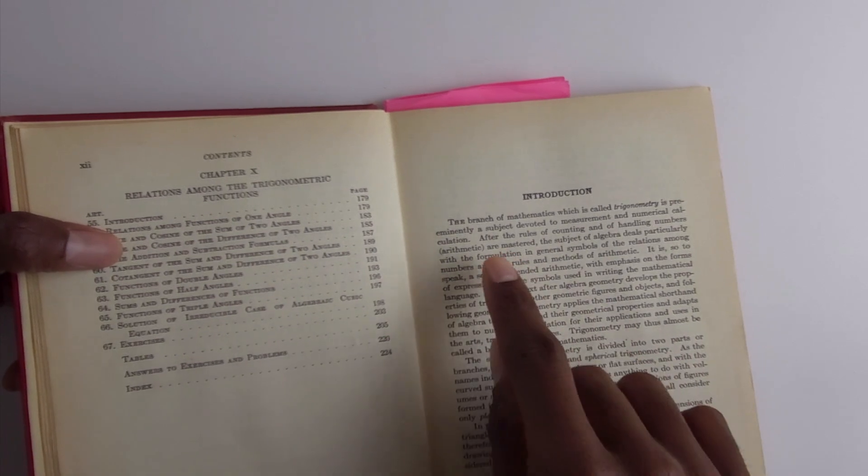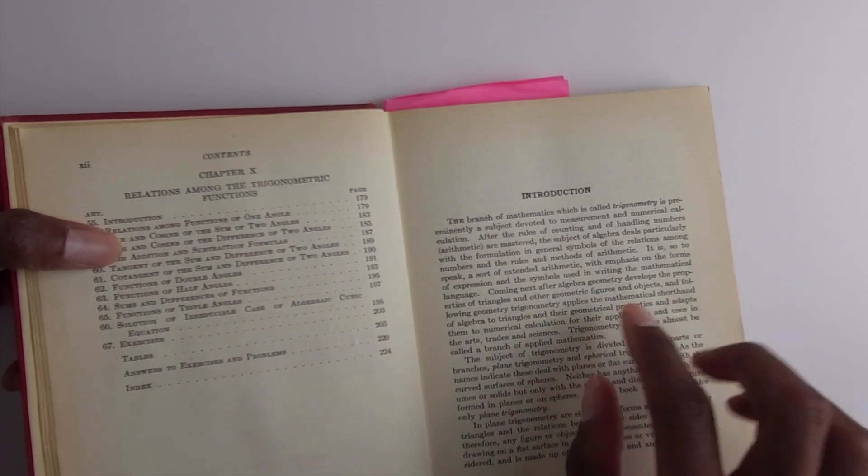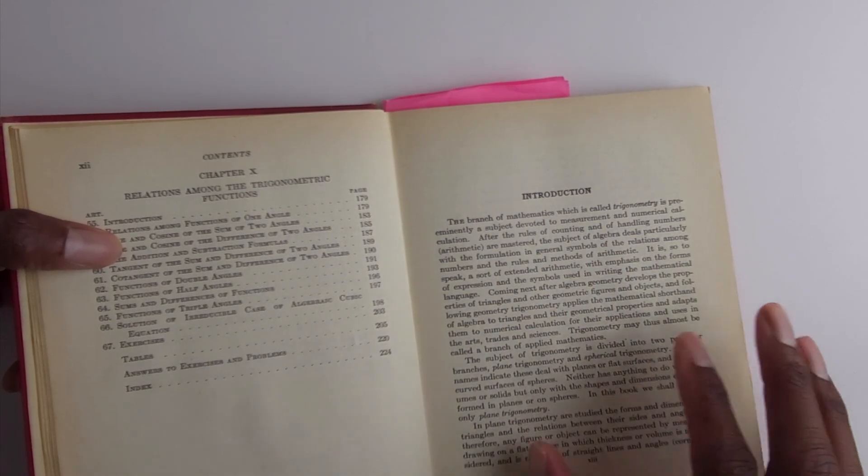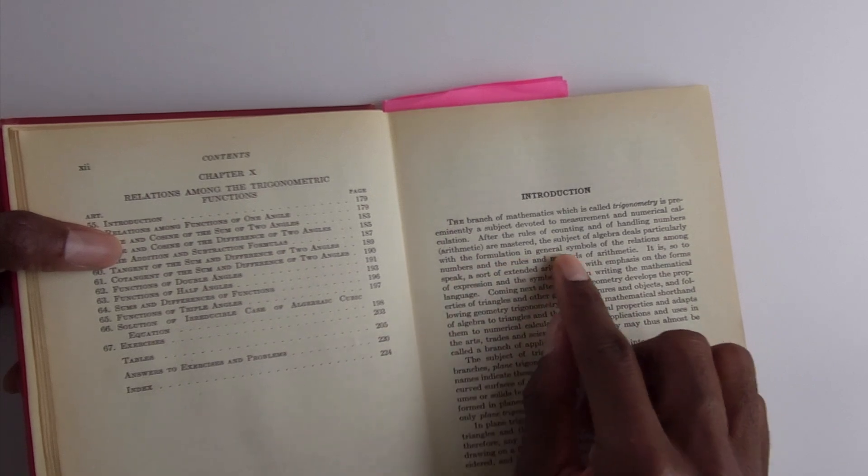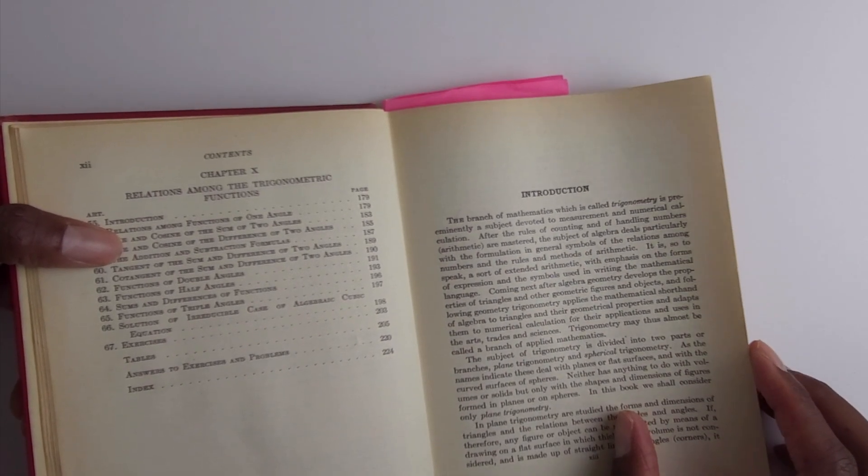In the introduction he says after the rules of counting and handling numbers, arithmetic, are mastered, remember there's an Arithmetic for the Practical Man book, the subject of algebra deals primarily with formulation and general symbols of the relationship among numbers and the rules and method of arithmetic.